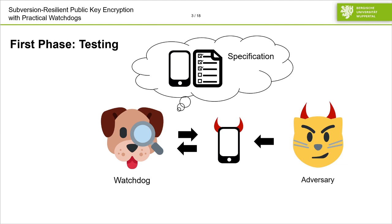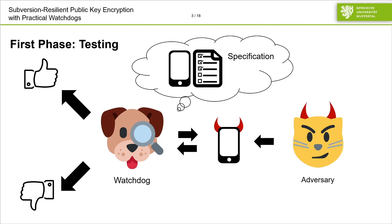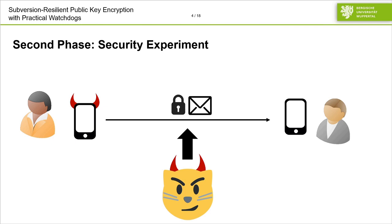According to this test, the watchdog then either approves of the implementation or discards it. Then in the second phase, we have a security experiment depending on which primitive you consider. The main twist here is that instead of your honest implementation, you use the implementation provided by the adversary to compute, for instance, ciphertexts.